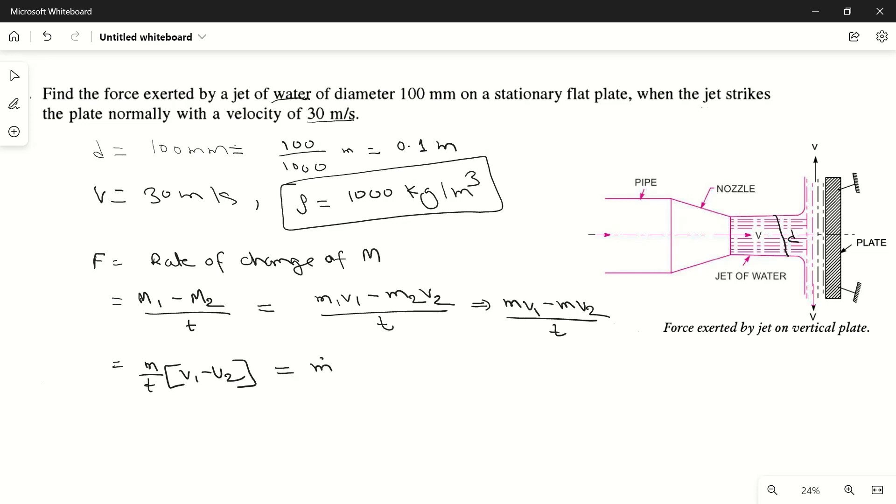Now see that mass flow rate, what is mass flow rate? Mass we know is density into volume, or we can write it as density into area into length. Volume can be written as area into length of this jet. But we have to find mass flow rate m dot, so it can be divided by time. M dot is m by t, so it will become rho A and length by time is velocity. So m dot will become rho A V.